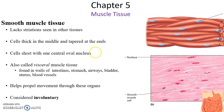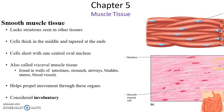Smooth muscle tissue lacks the striation, so it's called smooth because it does not have that dark-light banding pattern. One nucleus per cell, and the cells are pretty short. They tend to taper at their ends — wider in the middle where the nucleus is, tapering at the ends. They are sometimes called visceral muscle tissue because they're found in the walls of our hollow organs: the walls of the intestines, stomach, the airway, the bronchi, the trachea, down in the bladder, the uterus, blood vessels. They help to propel things through these hollow organs.